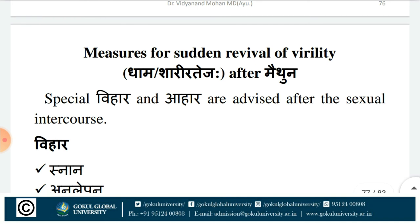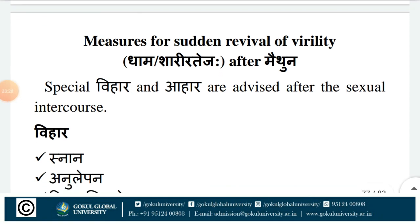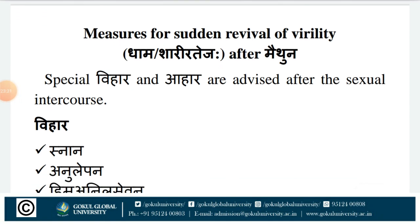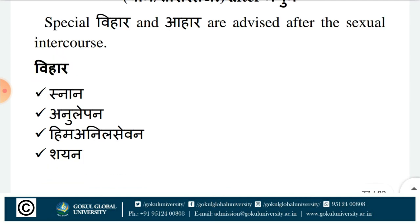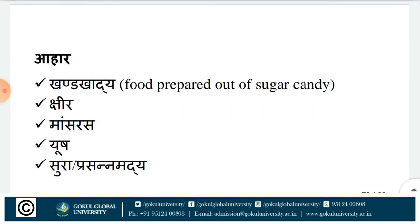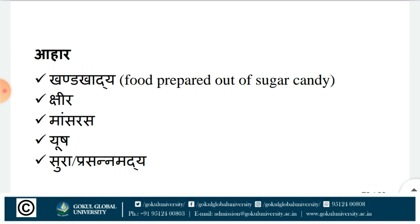Measures for sudden revival of virility — Dhama or Sharira Teja — after Maithuna, as the person may get weak and Shukra attains Kshaya. Special Vihara and Ahara are advised to regain virility. Vihara includes Snyana (bath), anointments, Hima (cold), exposing to cold breeze and Shayanu (sleep). Ahara includes Khandagadhyaya (food prepared from sugar candy), Shira (milk), Mamsarasa, Yusha, Suryavara Prasanna Madhya, etc. — these help in regaining the strength of the individual after Maithuna karma.